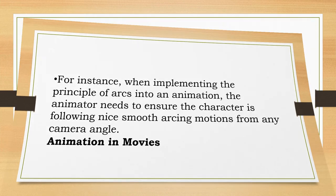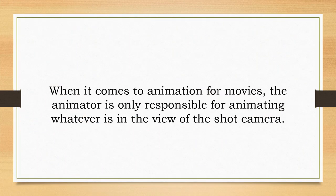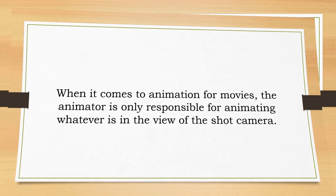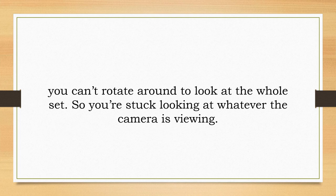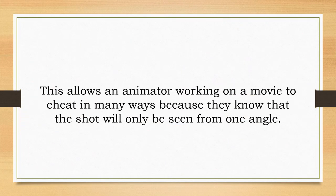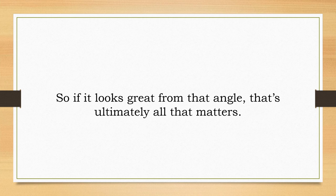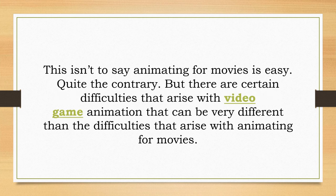Animation in Movies: When it comes to animation for movies, the animator is only responsible for animating whatever is in the view of the shot camera. In other words, they only have to worry about one camera angle at a time. If you're watching a movie, you hit play and can't rotate around to look at the whole set — you're stuck looking at whatever the camera is viewing. This allows an animator working on a movie to cheat in many ways, because they know that the shot will only be seen from one angle. So if it looks great from that angle, that's ultimately all that matters.